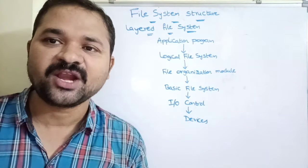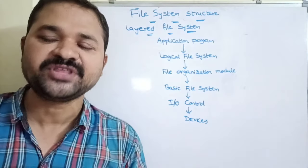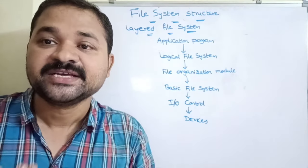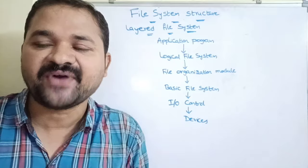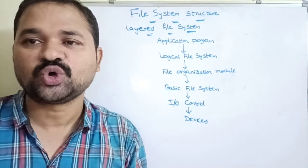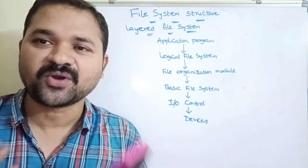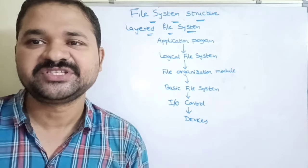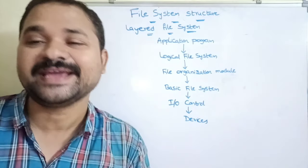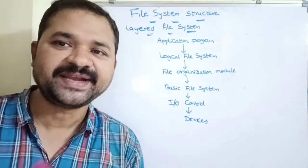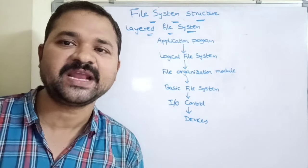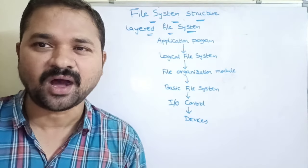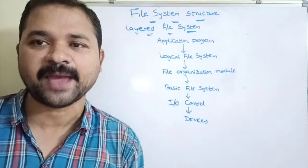The file system allows us to store data on the hard disk, and we can also search for files in the hard disk so that we can perform operations on files stored in the hard disk in an efficient manner. That is possible with the help of the file system. In order to make all those activities happen, the file system is organized into separate layers.